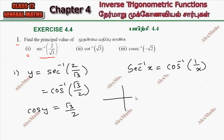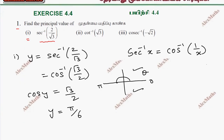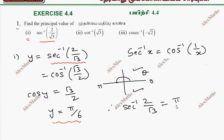Cosine is positive in the first and fourth quadrant. The principal value range is 0 to pi, so we take the first quadrant value. Therefore y equals pi by 6, because cos(pi by 6) equals root 3 by 2. So, sec inverse 2 by root 3 equals pi by 6.